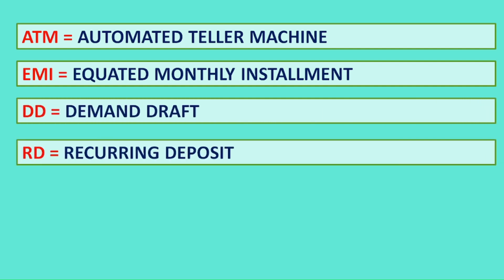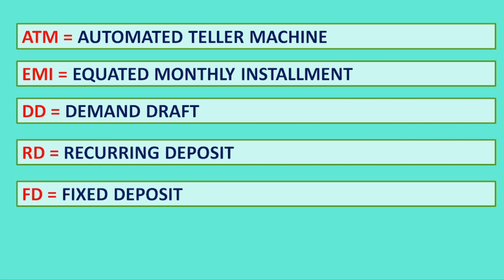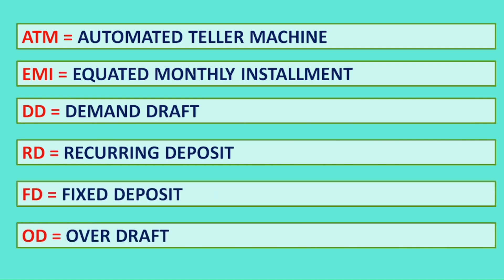RD: Recurring Deposit. FD: Fixed Deposit. OD: Overdraft.